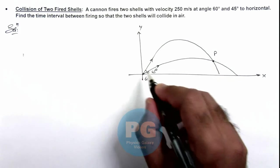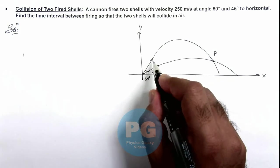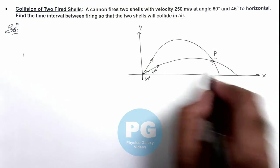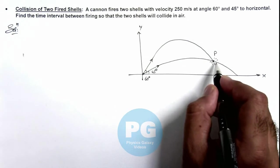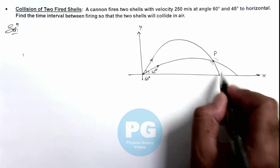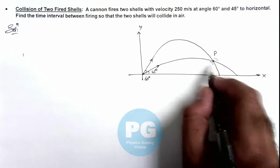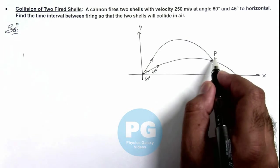If the two shells are fired in such a way that they're going to collide at this point P, because this is the point where the trajectories are intersecting, so if they collide they'll collide only at this point. The time taken by the two shells will obviously be different.